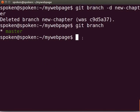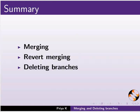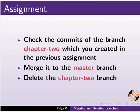With this, we come to end of this tutorial. Let us summarize. In this tutorial, we have learnt about merging, revert merging and deleting branches. As an assignment, check the commits of the branch chapter 2 which we created in the previous assignment. Merge it with the master branch and delete the chapter 2 branch.